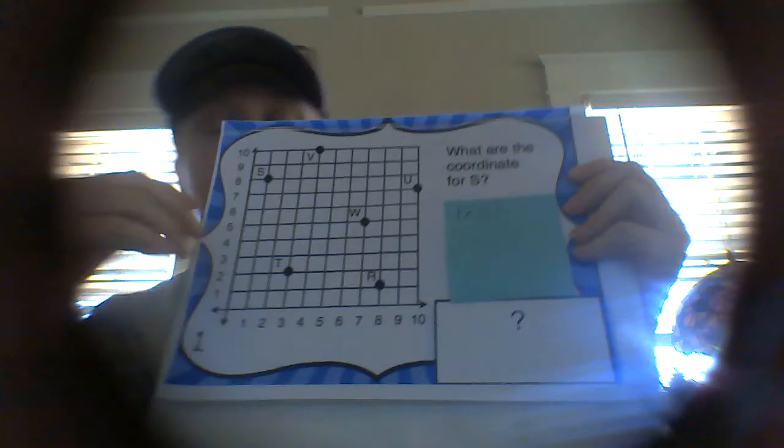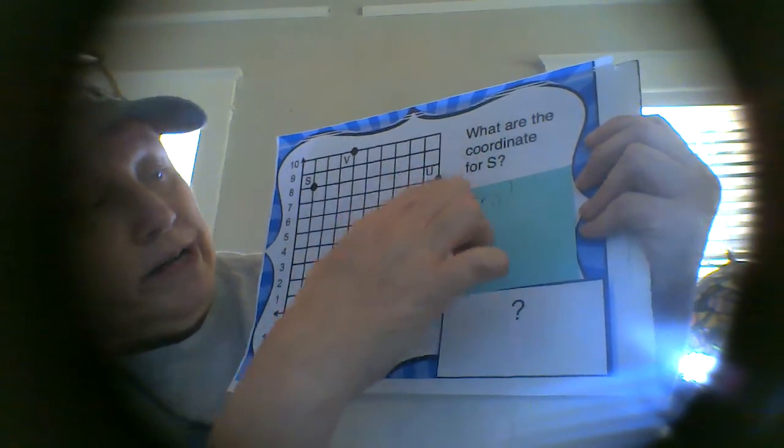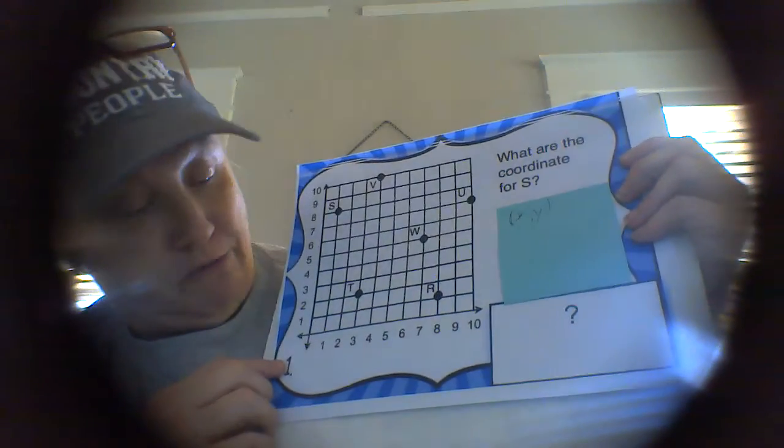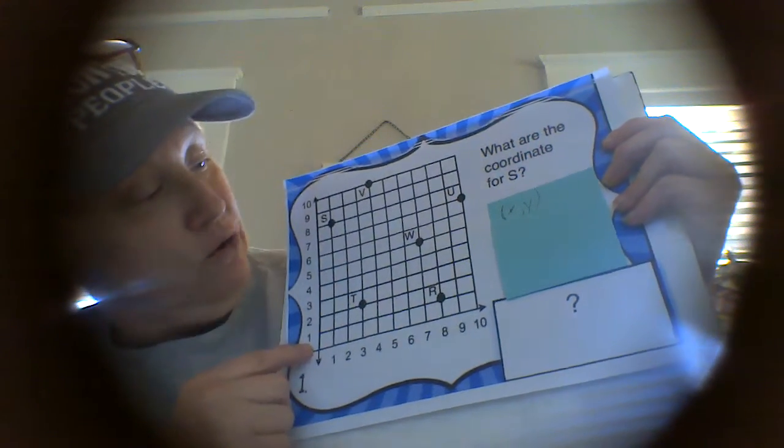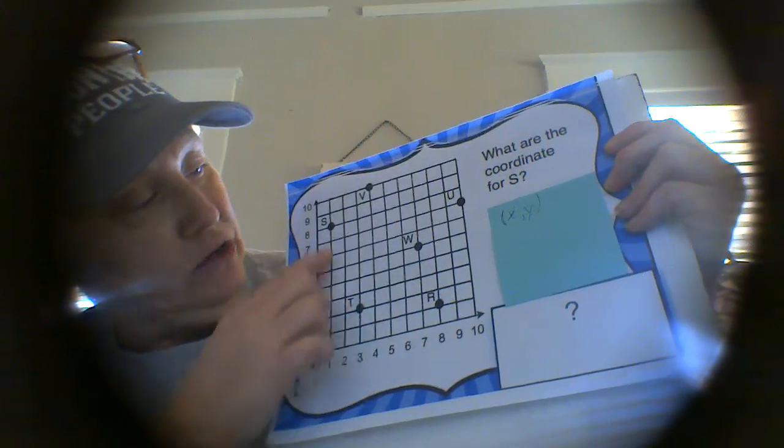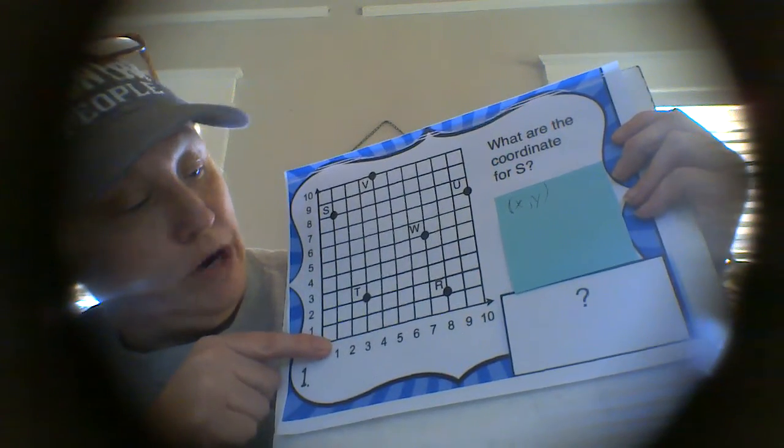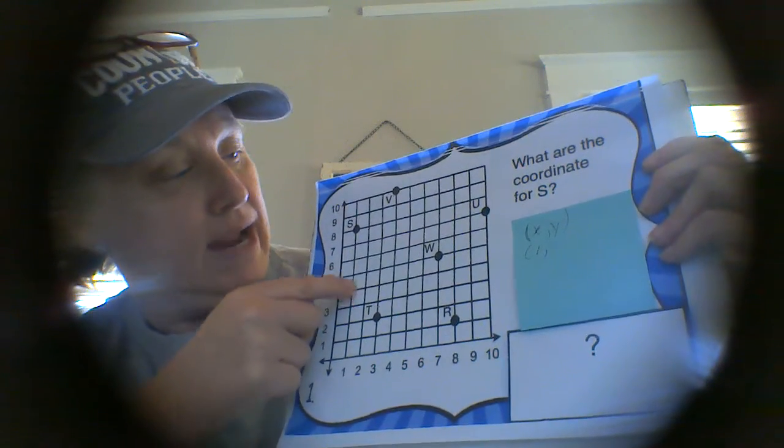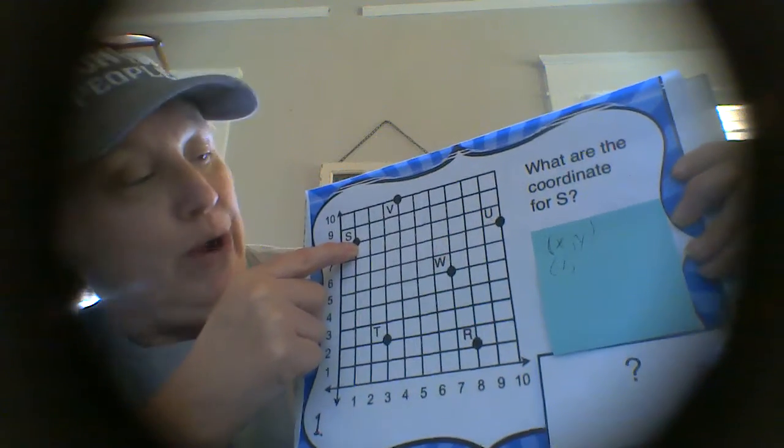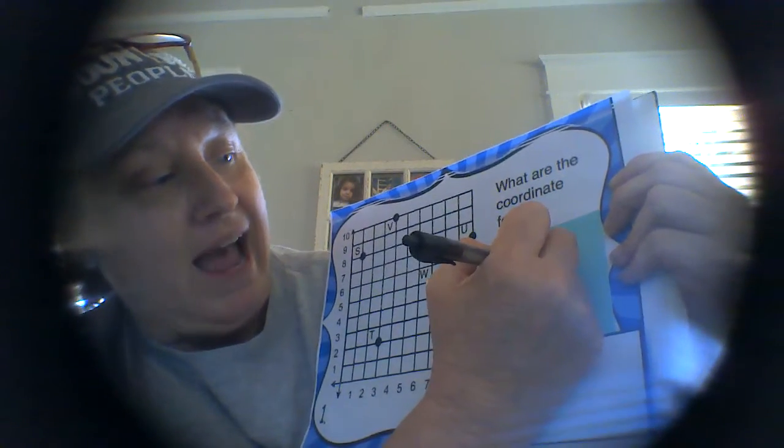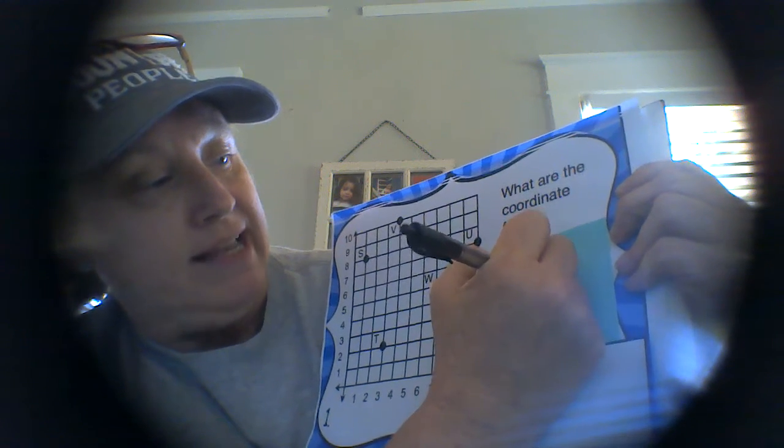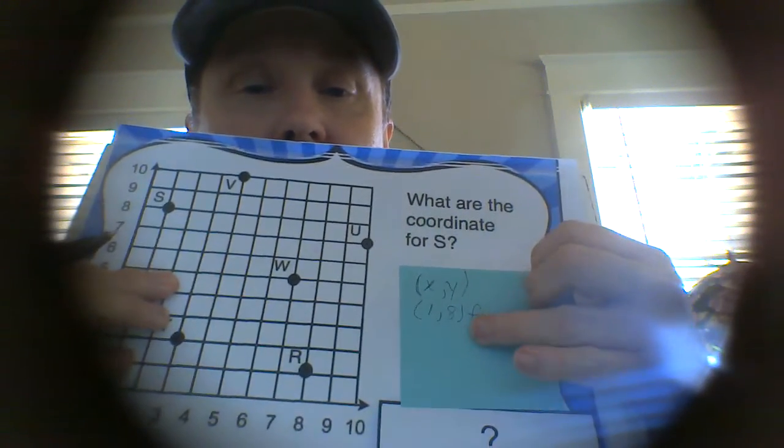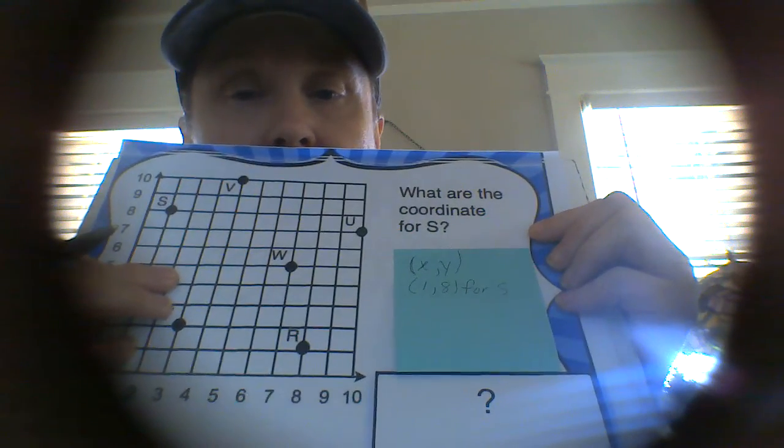So let's go ahead and get started. First, let's see if we can find the coordinate for S. So as I said before, we will start on our x-axis, and we will go to the right until we see the S, which is at the 1. So our x-axis for S is 1. Put my comma. And then we go all the way up to 8. So our y-axis, our coordinate for Y is 8. And that's how we would write the coordinate pair for S in parentheses.